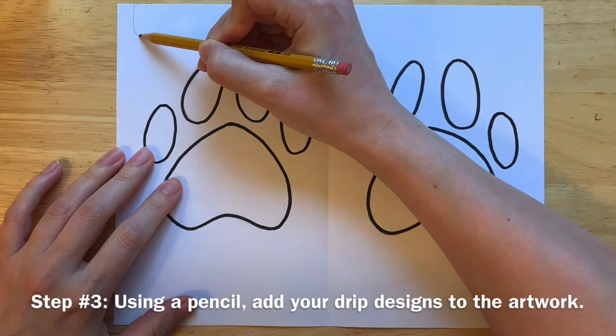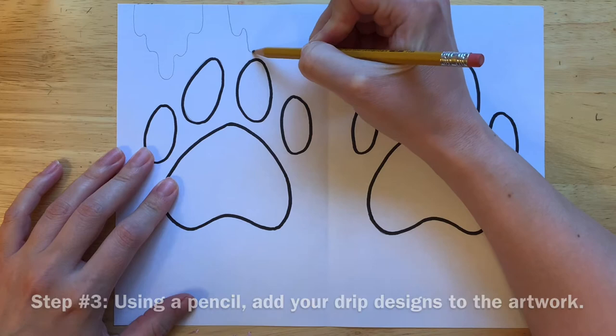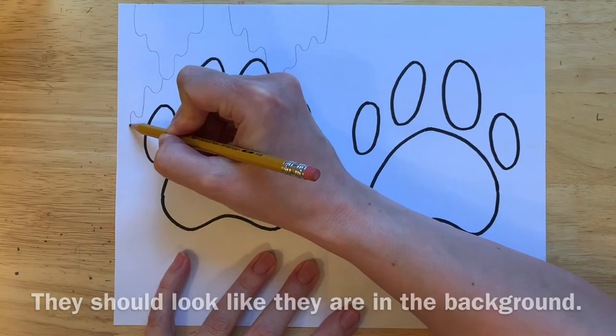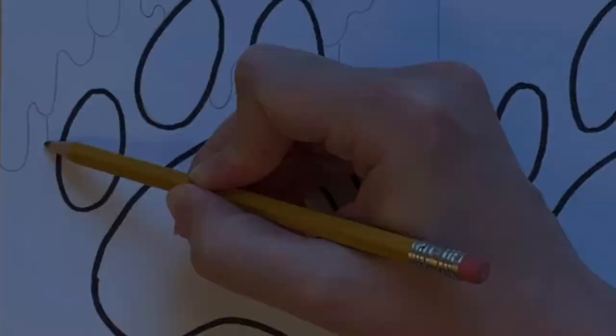Starting on the left hand side of your paper, place a drip design behind your subject, filling in the background. In my case, my drips appear to be behind my paw print.